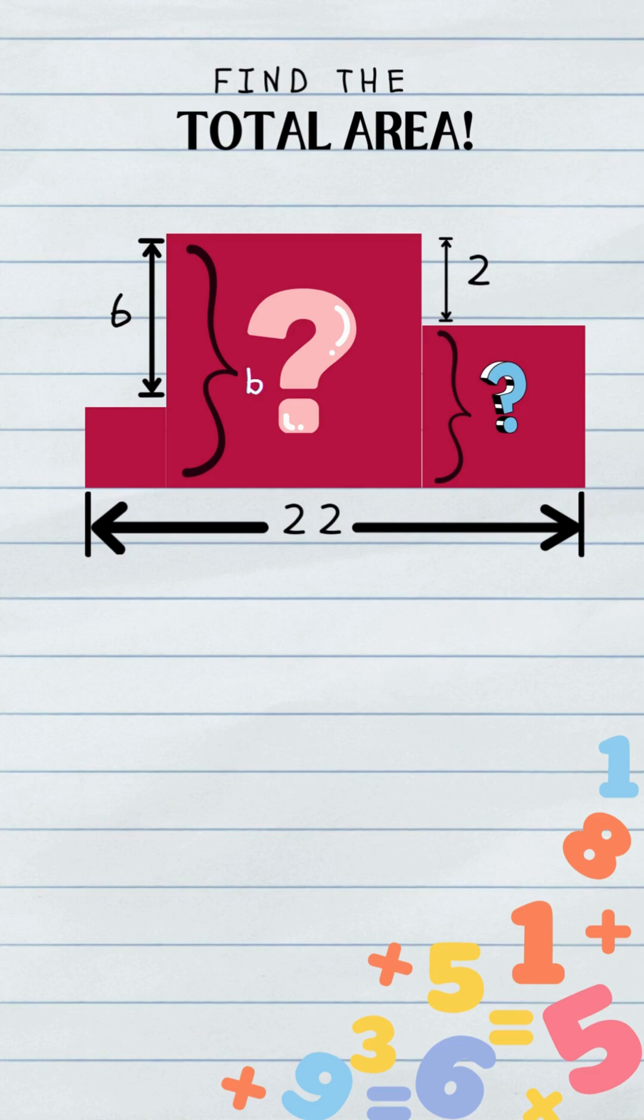So what's the side of this first square? Easy. It's the whole length B minus that little leftover chunk of 2. So B minus 2. Same deal for the tiny square on the right. It's the whole side B minus that 6 over there. So B minus 6.